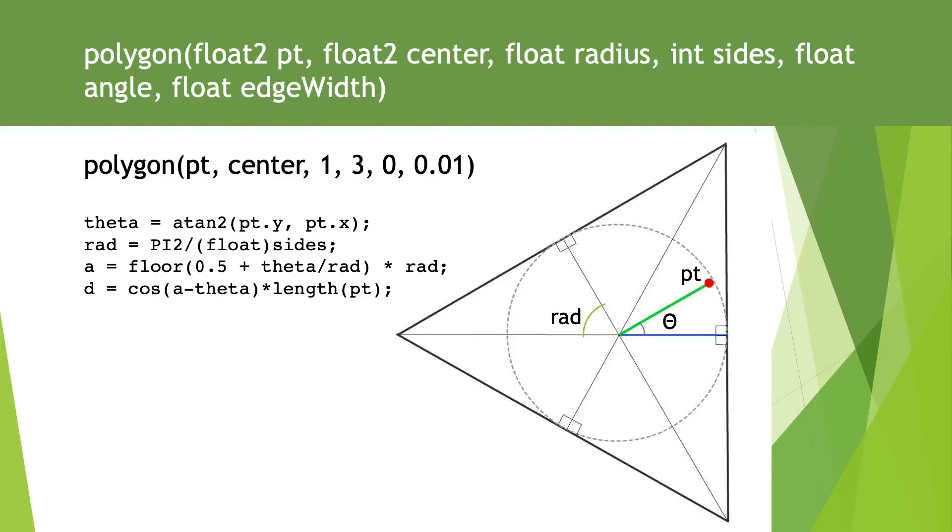we multiply the return value from cos by the length of the vector PT, the pixel being rendered in a coordinate system where 0,0 is the centre of the polygon. If the angle is 0, then cos returns 1. But if the angle is pi over 6, 60 degrees, then cos is 0.5.